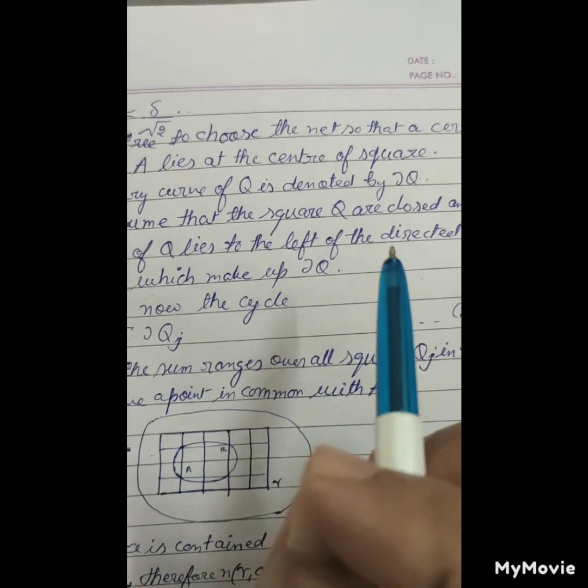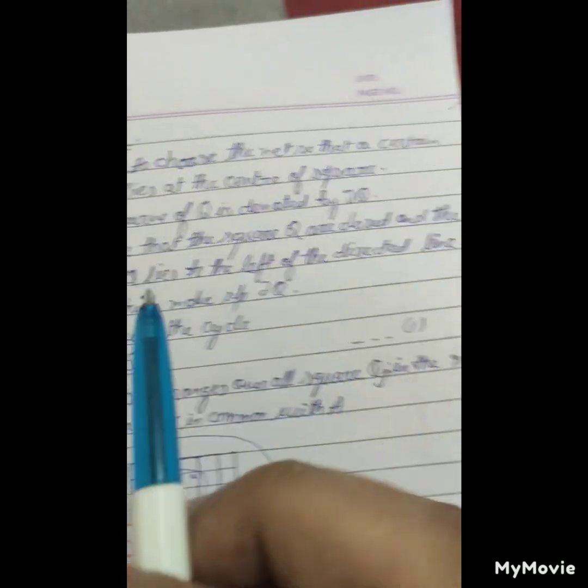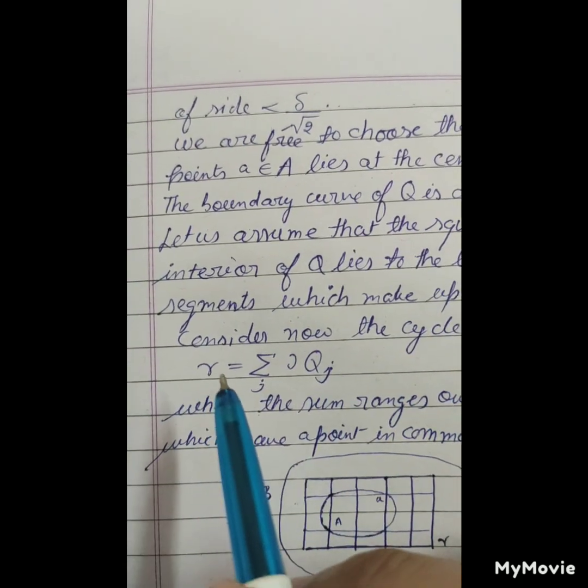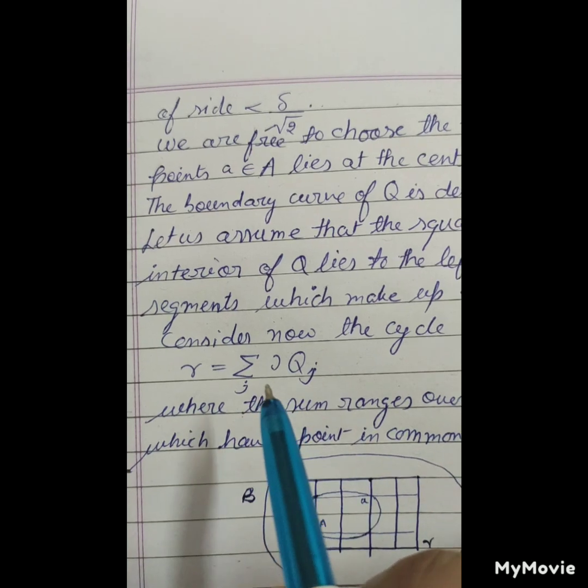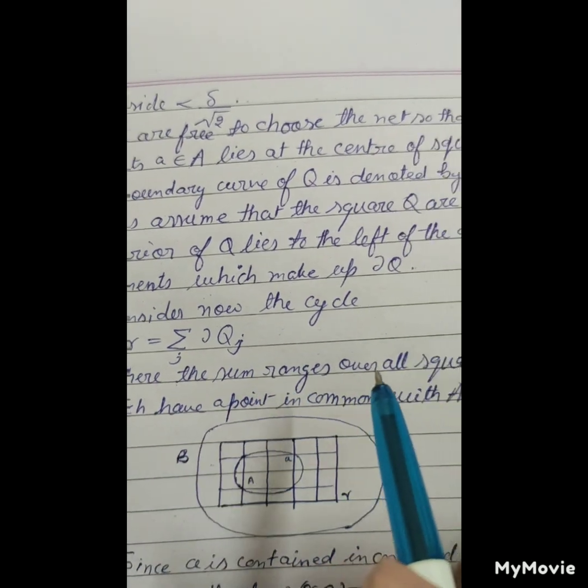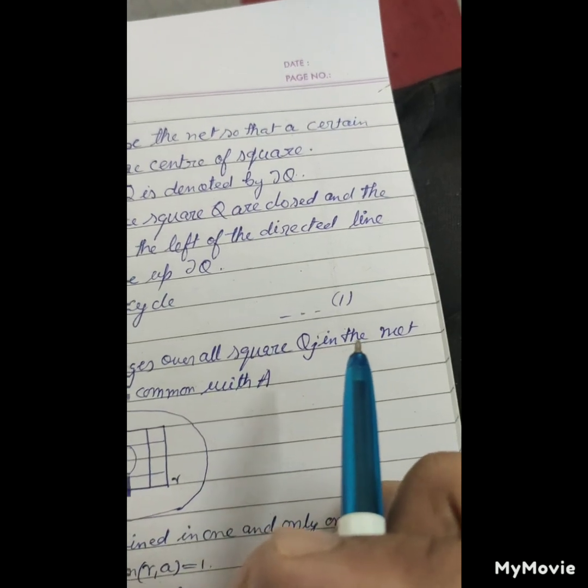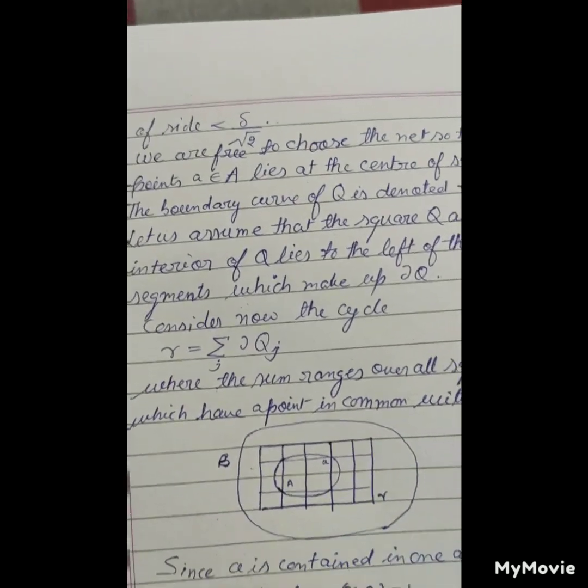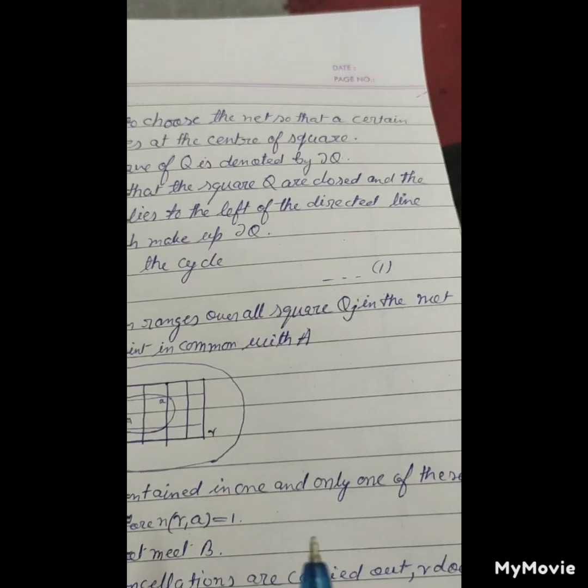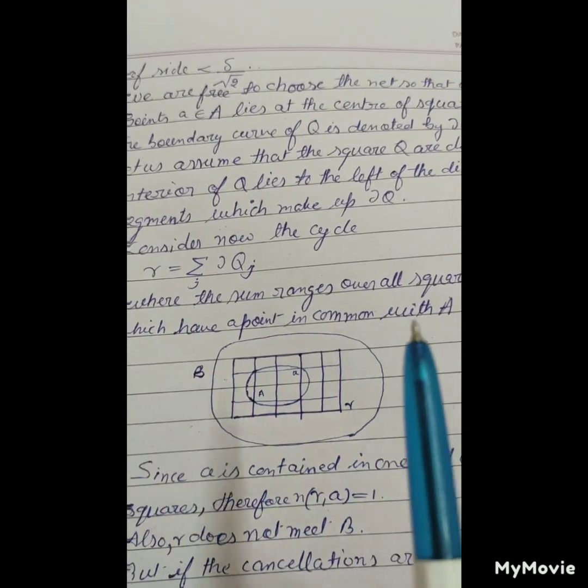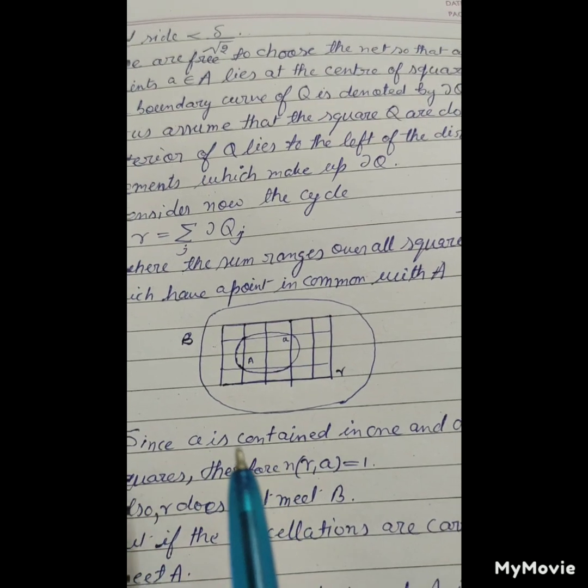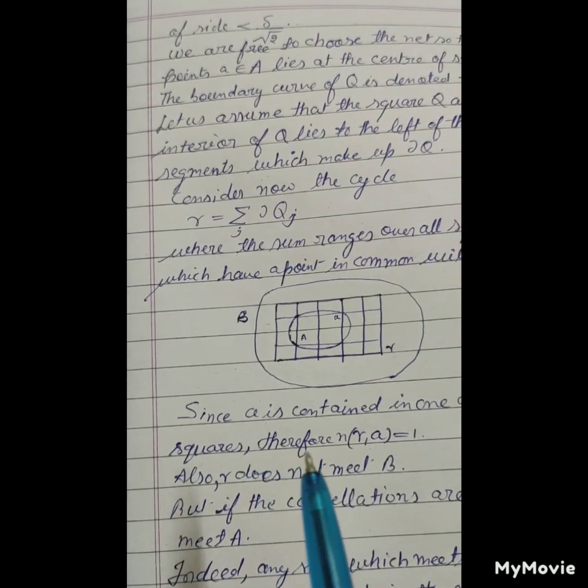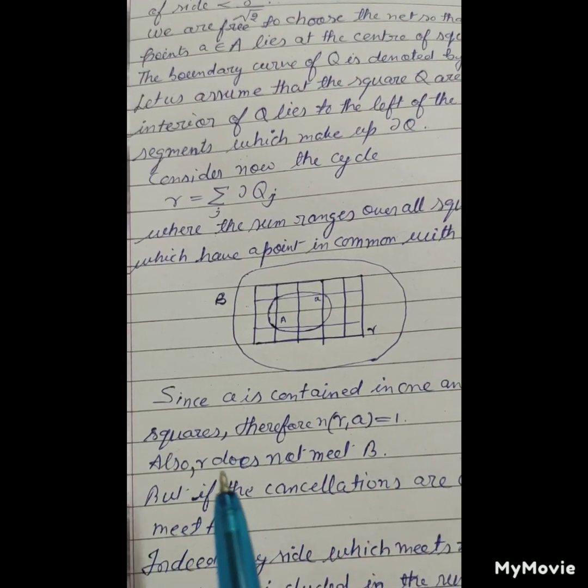Now consider the cycle gamma equals sigma of delta Qj, where the sum ranges over all the squares Qj which have a point in common with A. Since A is contained in one and only one of these squares, therefore n(gamma) is equal to one.